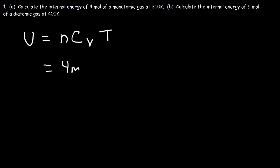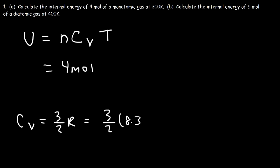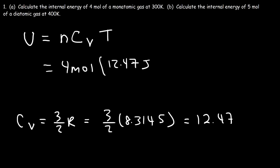We have four moles of gas. Now, what is the molar heat capacity at constant volume for a monoatomic gas? The formula is Cv equals 3/2 times R. So it's 3/2 times 8.3145, which gives us 12.47 joules per mole per Kelvin.